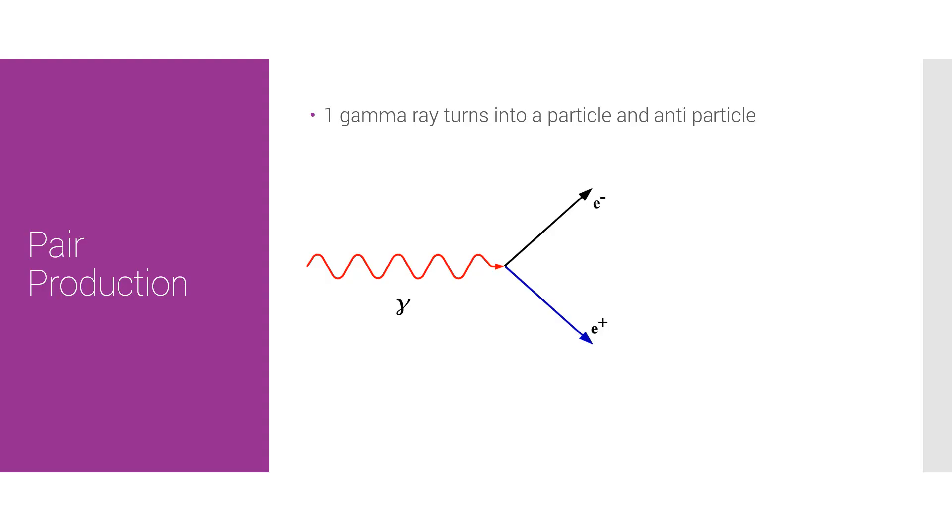Minimum energy, the minimum energy for a photon to perform pair production is the total rest energy of the end particles produced. Each particle has a rest energy of E0, so as you can see, there's two particles produced, that's why it's E times two.